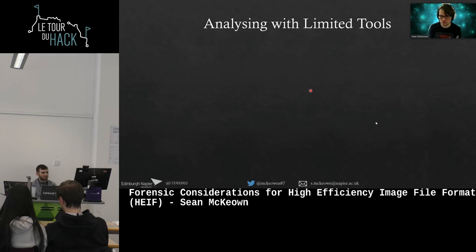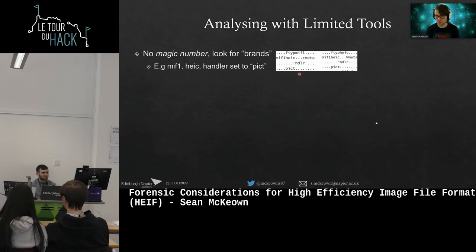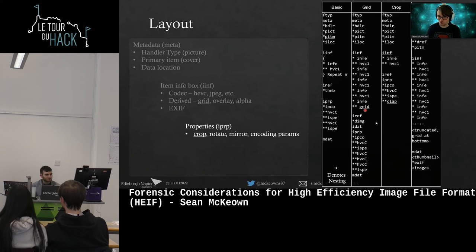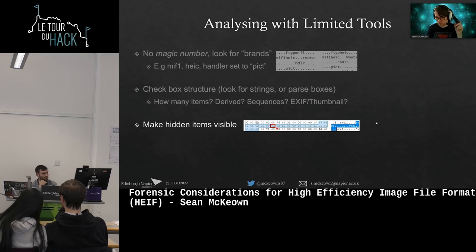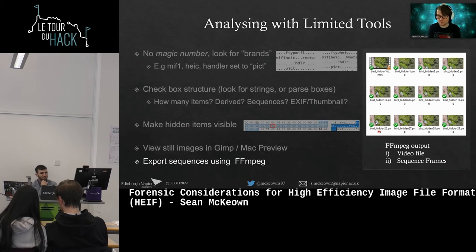Given the lack of support, my suggested analysis approach is: first, look at the header — if you see 'ftype heif' or 'MIF1 heic' it's a HEIF file. Check the box structure using strings to see if there are any derived images — a 'grid' tag tells you there are multiple master images even if tools can't display them. Check for hidden bits and un-hide them by flipping that specific bit. Then preview in Mac or GIMP for stills, and use FFmpeg export for video sequences — that gives you the best shot at seeing everything inside the container.